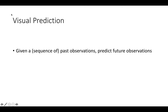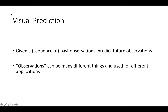In this problem, we are usually given a sequence of past observations, and then we need to predict the future observations. The observation space can be many different things, including the pixels or the internal states of the agent.